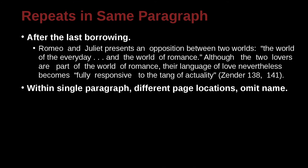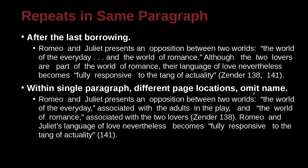Within a single paragraph, if the quotes are from different page locations, you can omit the author name after the first citation. For example, the first quote from Zender is cited as 'Zender 138,' and then a second quote from the same author on a different page is cited as just '141' — without repeating the author name. Just like in APA, we don't have to write it all over again, but we do need to be specific if it's from a different location.